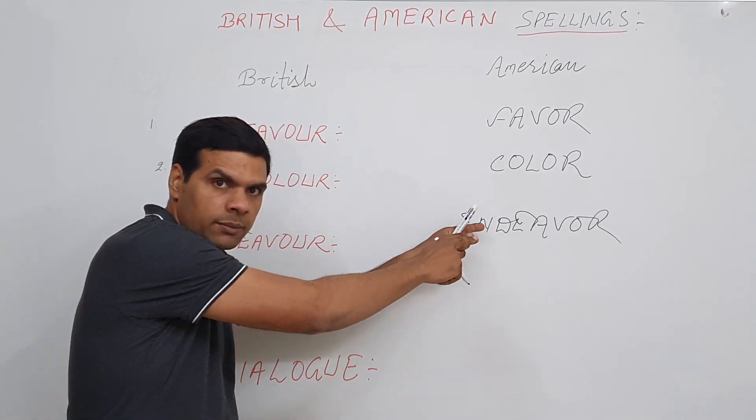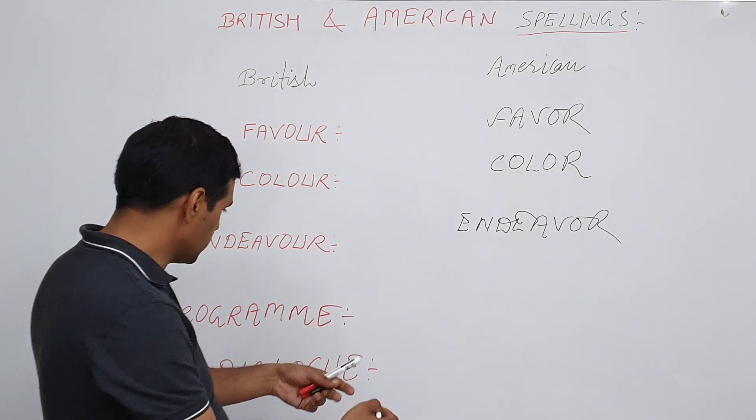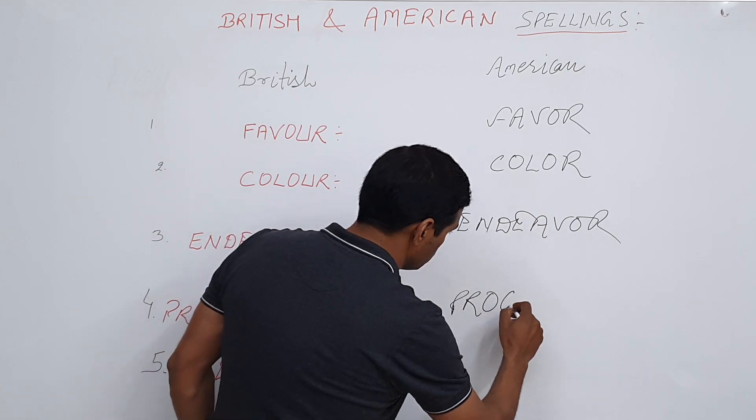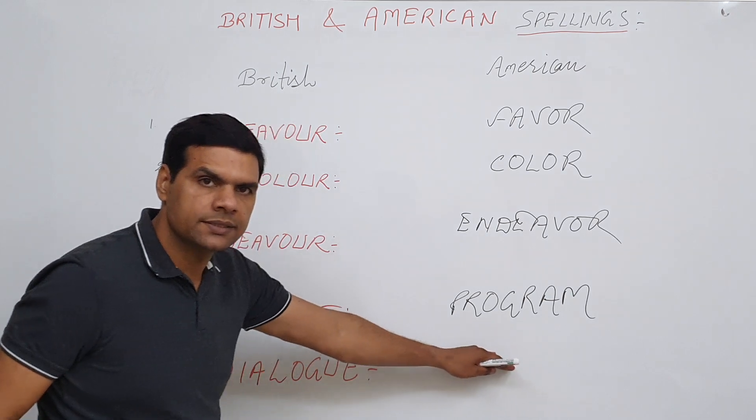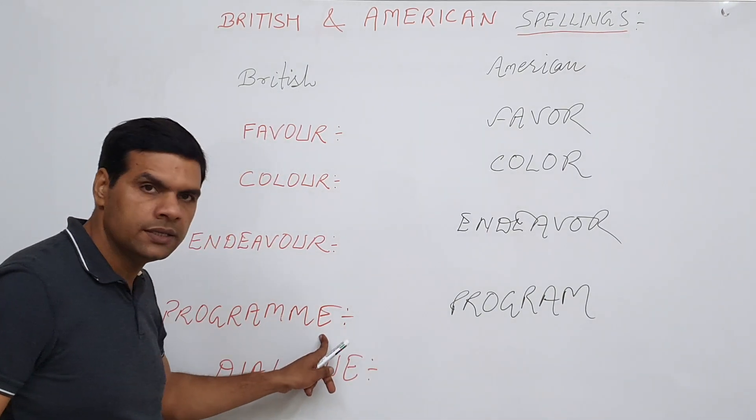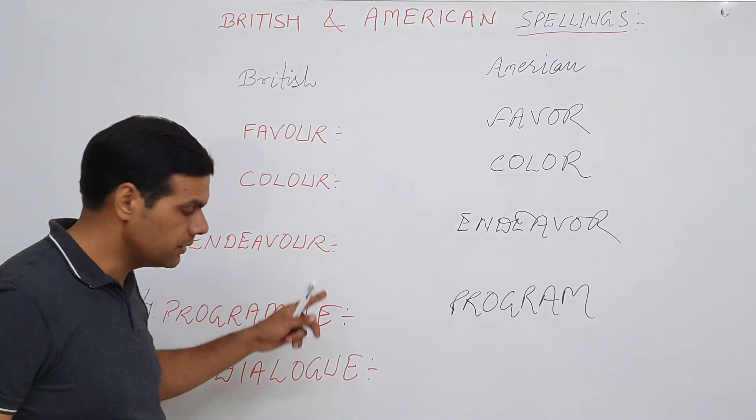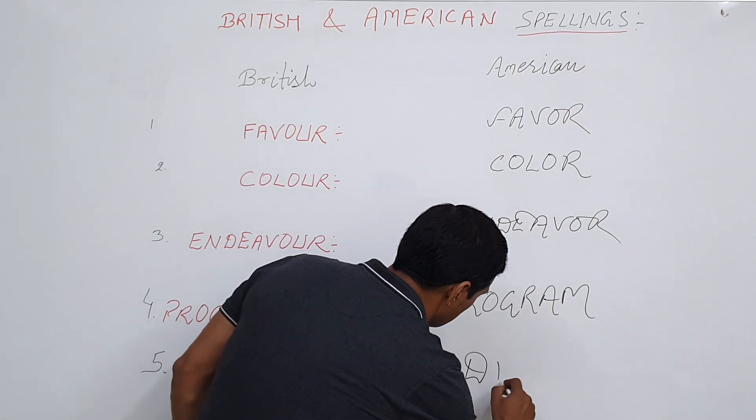Then the next word is programme, which is spelled as P-R-O-G-R-A-M. So 'M-E', these two letters get dropped. Up to here, only one letter was omitted. Next word is dialogue, which becomes D-I-A-L-O-G. So again, 'U-E', these two letters are dropped.